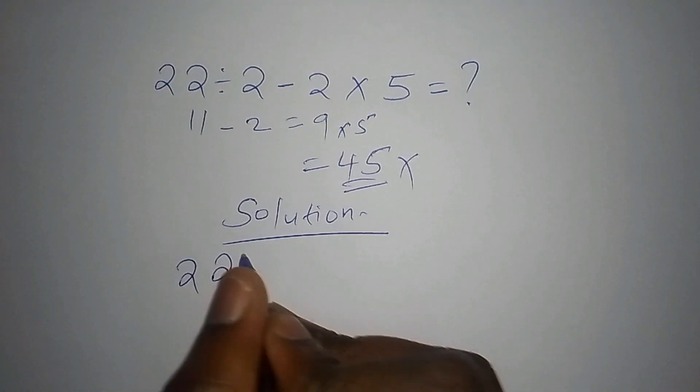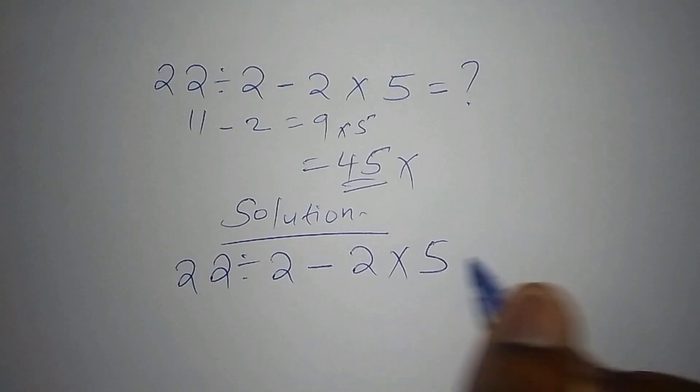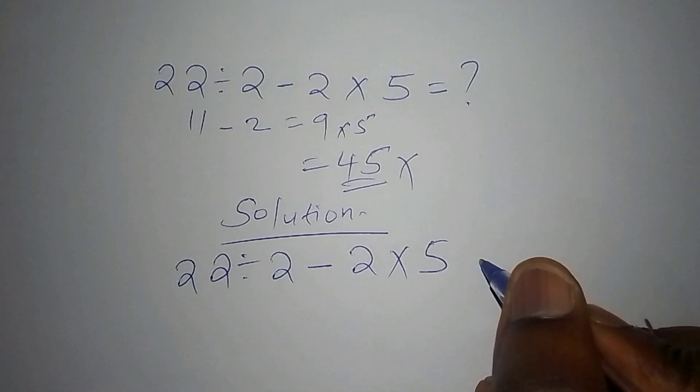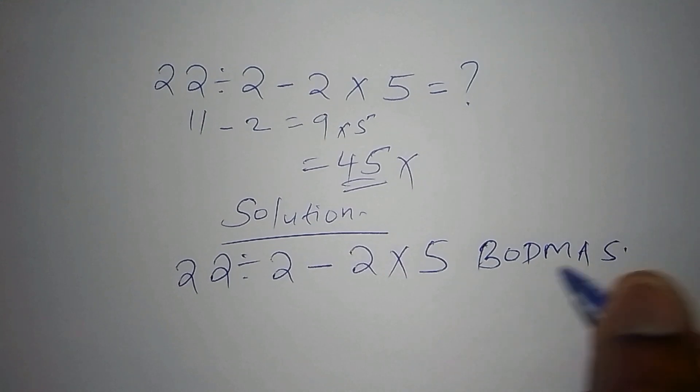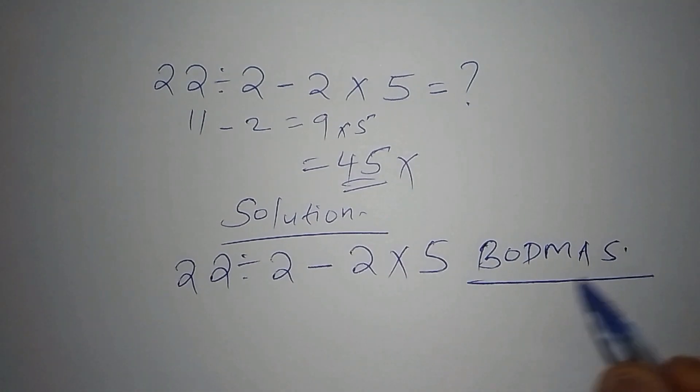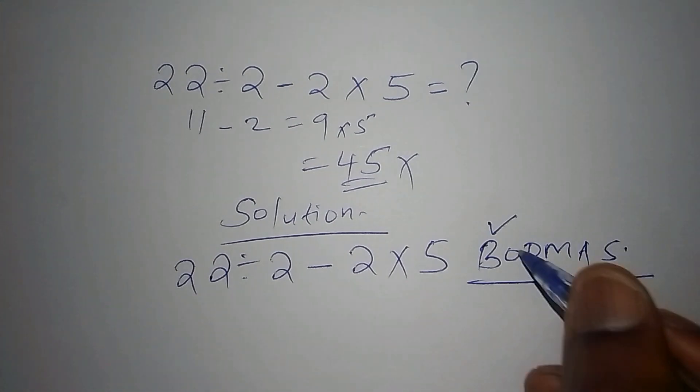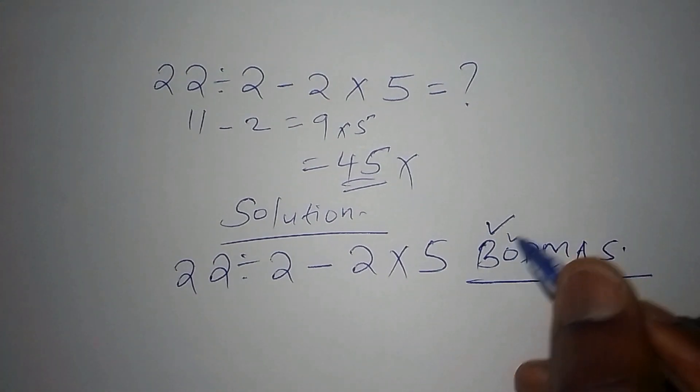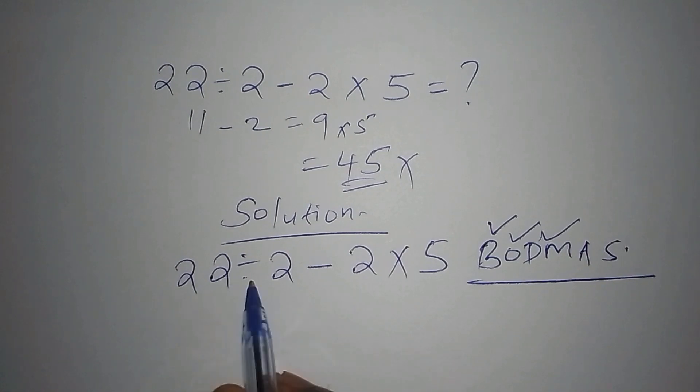We have 22 divided by 2 minus 2 times 5. So before we work this out, we know we have something called BODMAS. You must always check this operation, it will guide you on what you're supposed to start with. B is not there, B stands for brackets, not there. O is also not there. So we now have the division, so we begin with this: 22 divided by 2 which is 11.